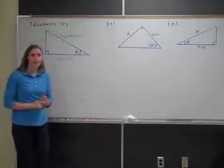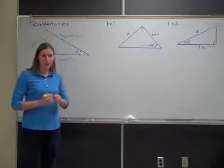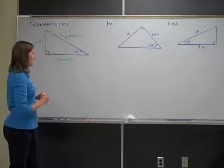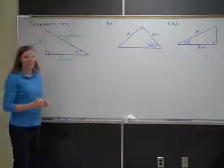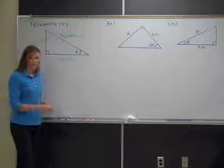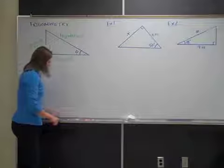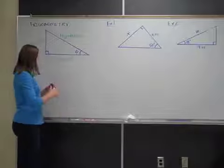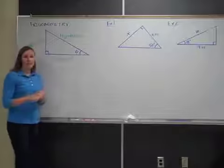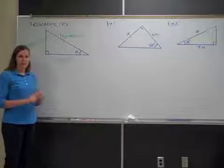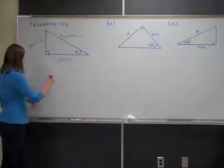The first step in doing any trig problem is to label the three sides relative to the angle that you want to work with. And the three ratios that we're looking at are the sine, the cosine, and the tangent.